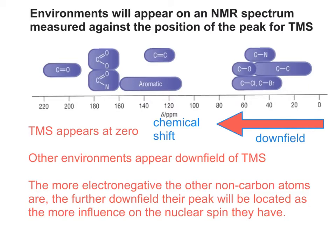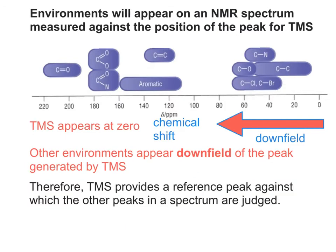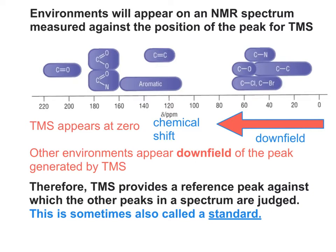When you look at a spectrum, you're always looking for what chemical shift your environment might come up as. You can see quite clearly that each chemical environment involves a carbon atom. Each carbon atom on this scale will be in a different environment, so the position of its peak on the spectrum is going to be in a different place. TMS provides a reference peak against which other peaks in the spectrum are judged. Sometimes this is also referred to as a standard. TMS's peak will be located at this point, so everything else is downfield of it. That movement downfield is called a chemical shift, and the chemical shift is determined by the degree of spin of the carbon nuclei.